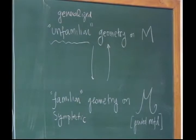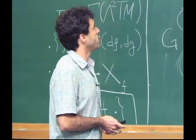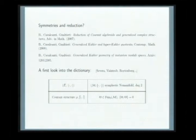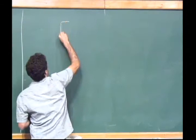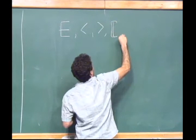If you want to extend reduction to this unfamiliar geometry, things become much more complicated, partly because symmetries now can be much more general — you have two-forms acting as symmetries and so on. I wrote a few papers with Cavalcanti and Gualtieri on this problem, came up with many examples and constructions, but there was still some kind of guideline missing. The guideline is really given by this dictionary.